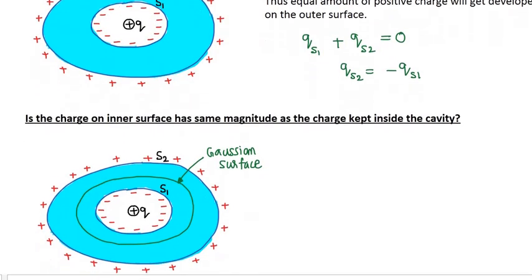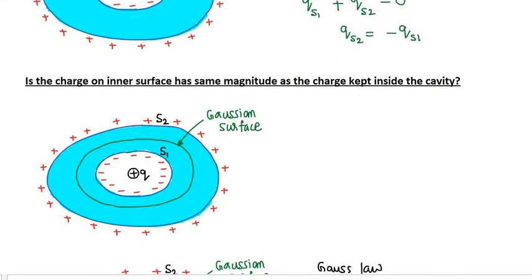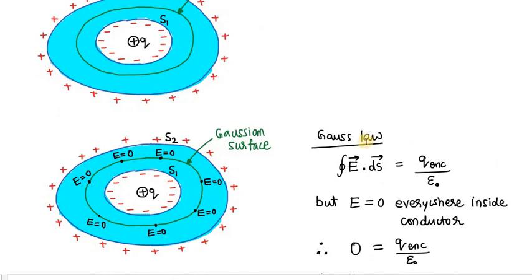In order to find this answer, draw a Gaussian surface whose boundary always passes through the inner part of the metal, everywhere passing through the metal, enclosing the cavity, the inner surface charge, and the charge kept inside the cavity. Now, let us apply Gauss's law to this conductor. Gauss's law states that the surface integral of E·dS over the whole Gaussian surface equals Q enclosed divided by epsilon naught. We know that at each and every point inside the metal the electric field is zero, so at each and every point on the Gaussian surface the electric field is also zero.